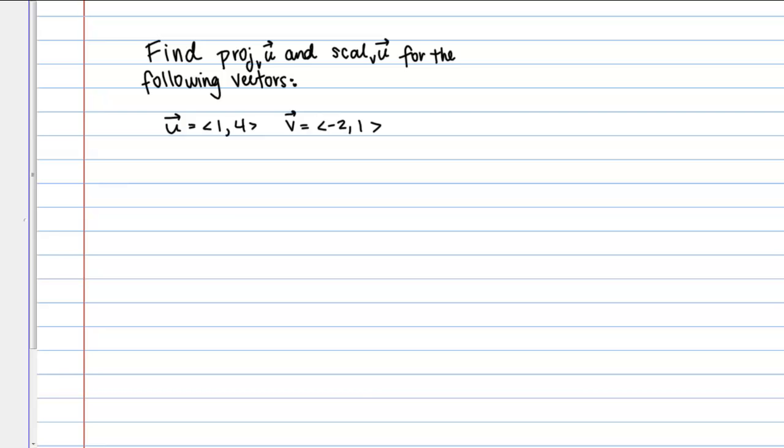In this example, we're asked to find the projection of vector U onto V, and also the scalar component of U in the direction of V for the following vectors. U is a vector 1, 4, and then V is a vector negative 2, 1.